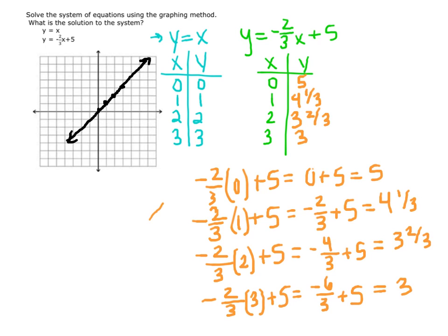Next, we just have to plot the second equation, y equals negative 2 thirds x plus 5. So we plot 0, 5, 1, 4 and 1 third which is about here, 2 and 3 and 2 thirds, and lastly 3 and 3. Connecting these points, we see that they intersect at 3 and 3 for both of these equations.